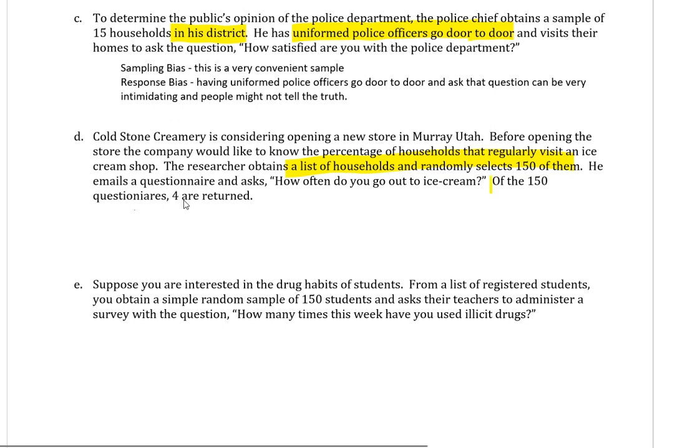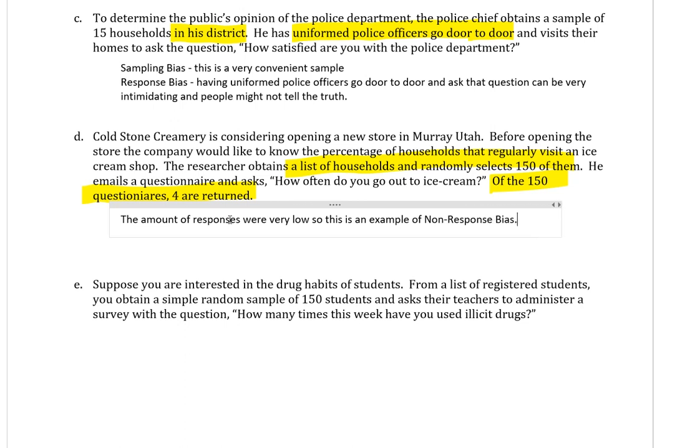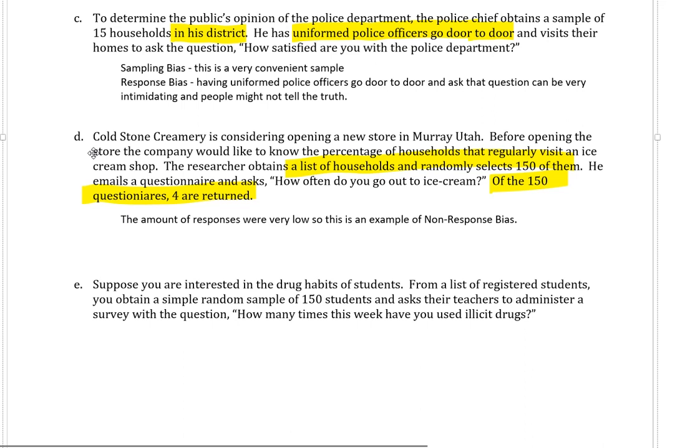The main problem is this end sentence. Of the 150 questionnaires, four were returned. That's a very small percentage. That's a little over 1% if my math is correct. That's not too great. No, that would be a little over 2% or 3%. It's still not too great. It's very low. So the amount of responses were very low. So this is an example of non-response bias. Only having four questionnaires returned of the 150 is probably not enough information for them to go on, to know if people rarely visit an ice cream shop. That's not enough responses. So that would definitely be an example of non-response bias.